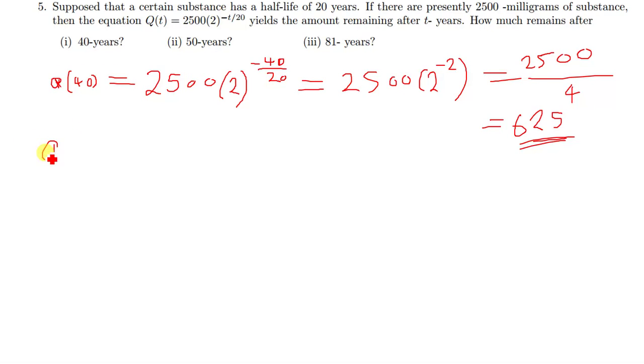Let's also find Q of 50 years. So Q(50) is equal to 2500 times 2 raised to power negative 50 over 20. You reduce that and then find the final answer.